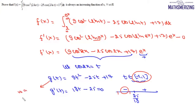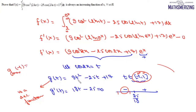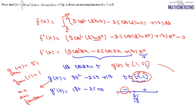Since g(t) is decreasing on [-1, 1], its maximum occurs at t = -1 and its minimum at t = 1. At t = -1: g(-1) = 9 + 25 + 17 = 51. At t = 1: g(1) = 9 - 25 + 17 = 1. So the range of g(t) on [-1, 1] is [1, 51], which is always positive.